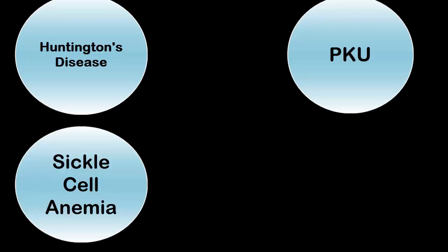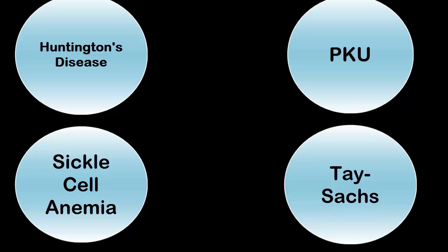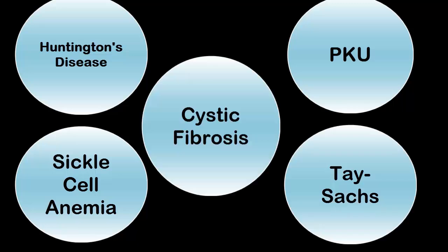Some examples of Mendelian disorders include Huntington's disease, phenylketonuria (PKU), sickle cell anemia, Tay-Sachs, and cystic fibrosis, which I'll cover in a little more depth.